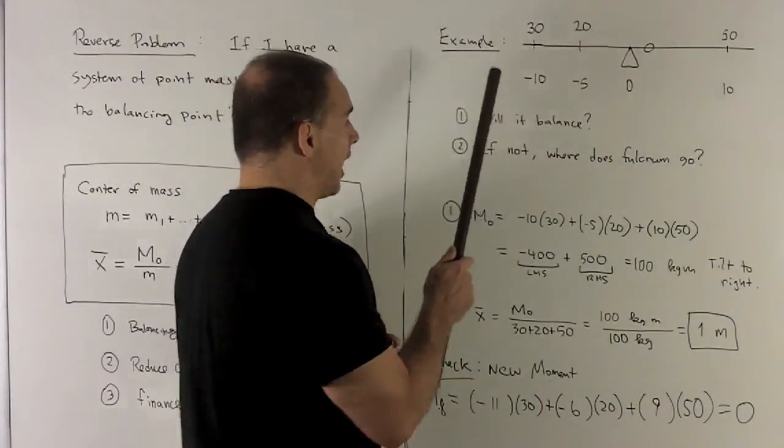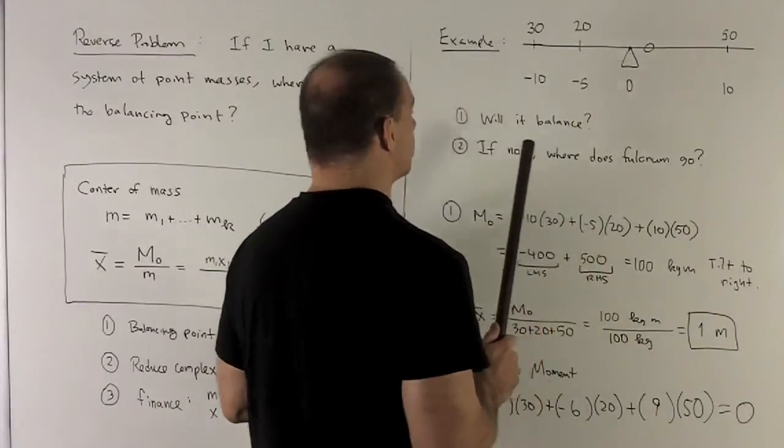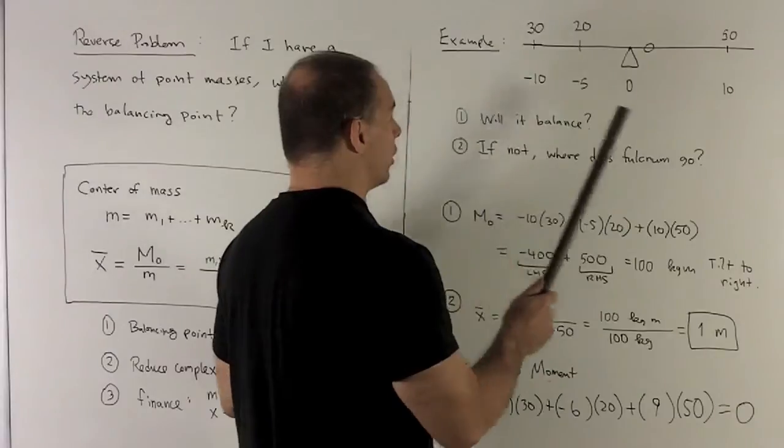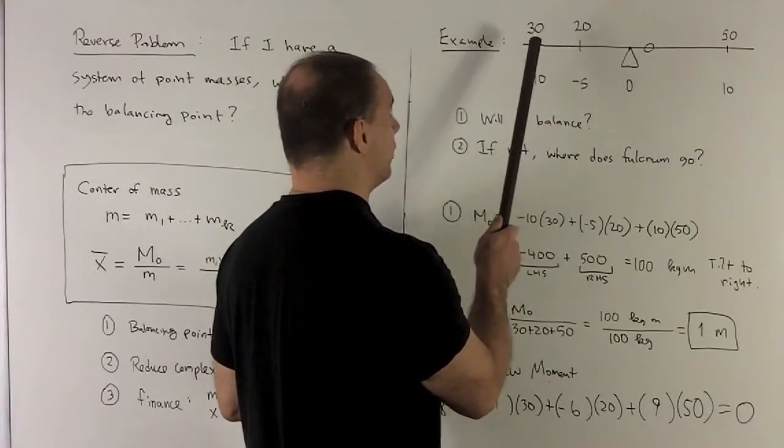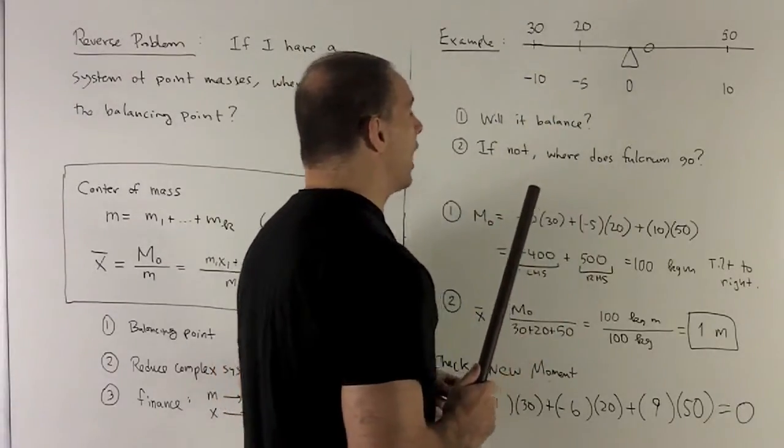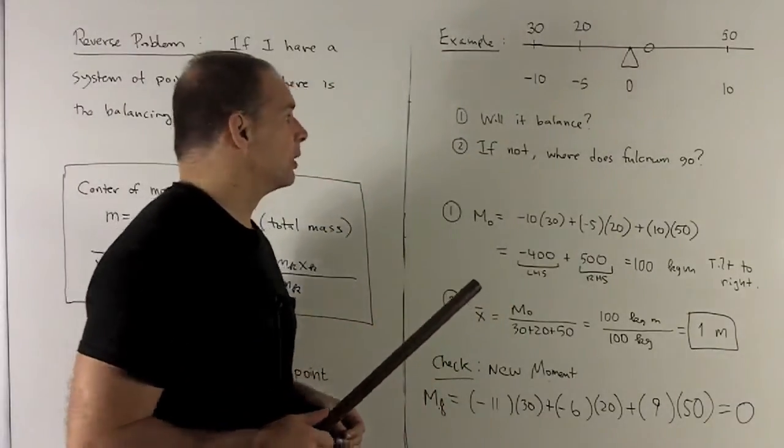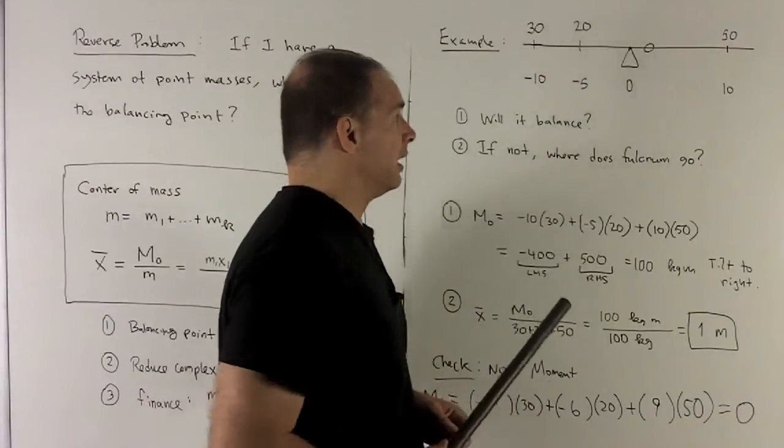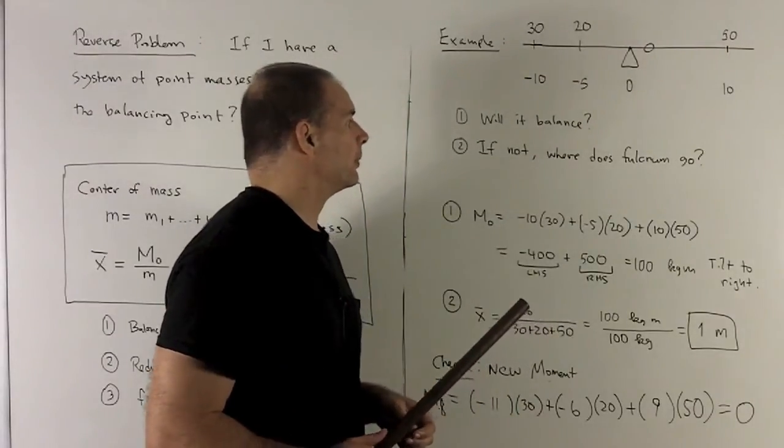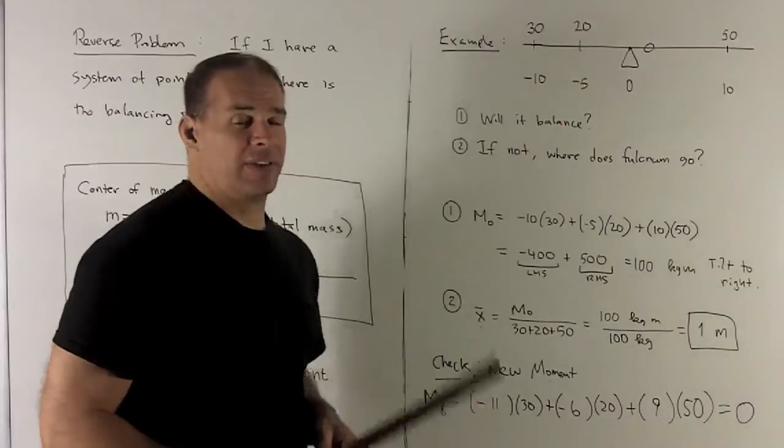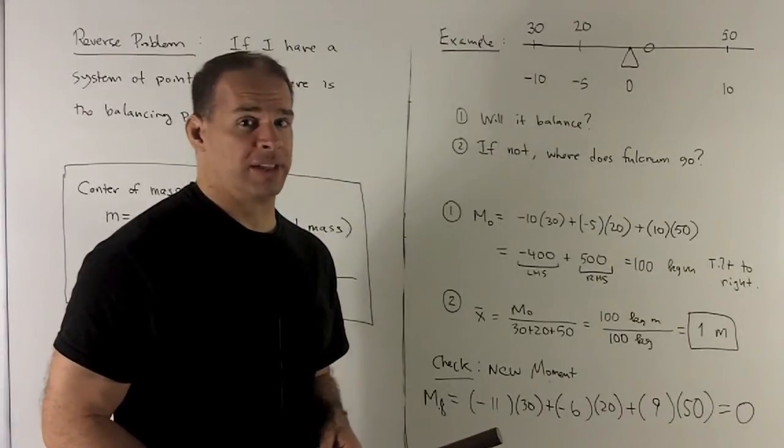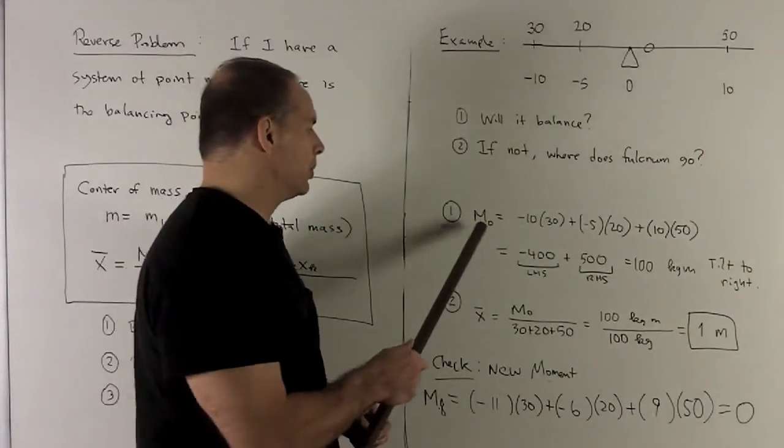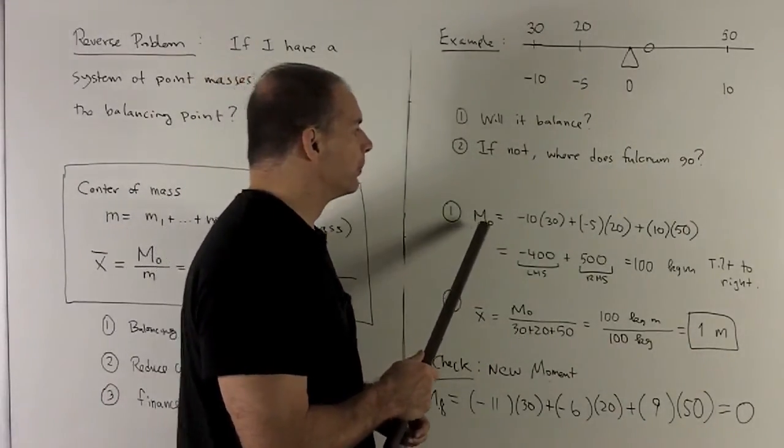For this example, I have a system of point masses, and we're going to want to know, will it balance? So our units here are going to be the same as before. We'll have masses given in kilograms, distances given in meters, and when I ask about balancing, we're assuming we have the force of gravity coming down from the top. So will it balance? And if not, where should I put the fulcrum so that it does balance? To find out if it balances or not, we'll just compute the moment about the origin.